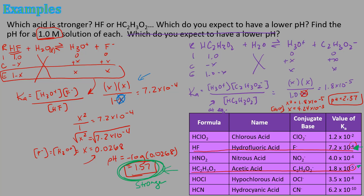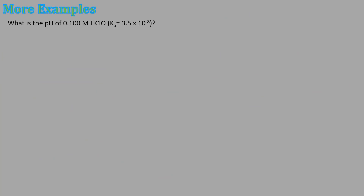For comparison, a 1.0 M HCl solution would have pH = −log(1.0) = 0, since HCl dissociates completely. Even though all three acids started at the same concentration, they give very different pH values, because weak acids don't dissociate to the same degree. Strong acids dissociate 100%; weak acids do not, and you must use the Ka to find the equilibrium hydronium concentration.